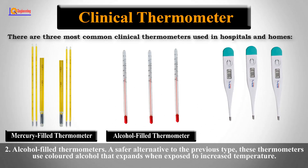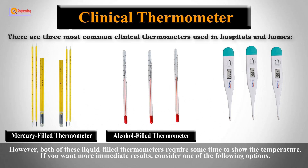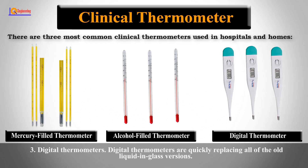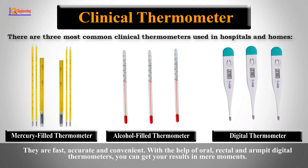Alcohol-filled thermometers are a safer alternative. These thermometers use colored alcohol that expands when exposed to increased temperature. However, both liquid-filled thermometer types require some time to show the temperature. If you want immediate results, consider a digital thermometer. Digital thermometers are quickly replacing all of the old liquid-in-glass versions. They are accurate and convenient, and with oral, rectal, and armpit digital thermometers, you can get your results in mere moments.